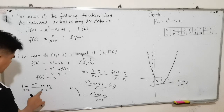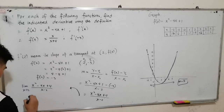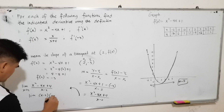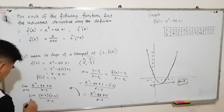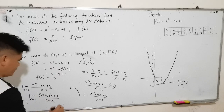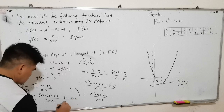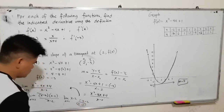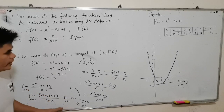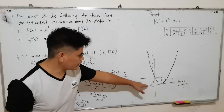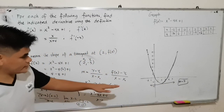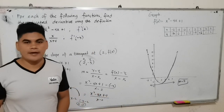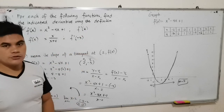The factor of x squared minus 4x plus 4 is (x minus 2)(x minus 2), over x minus 2, as x approaches 2. We cancel one (x minus 2) factor, leaving the limit of (x minus 2) as x approaches 2, which equals 2 minus 2 equals 0. This confirms the tangent line is horizontal with slope 0, consistent with the graph.